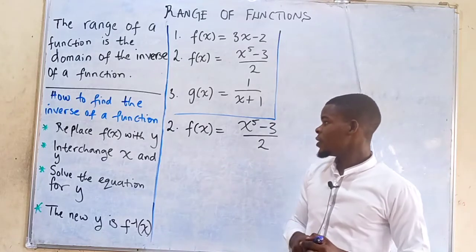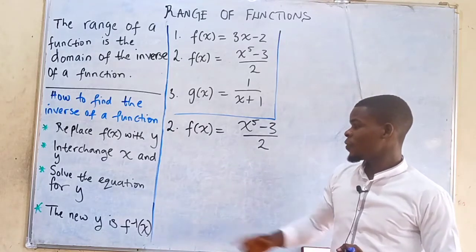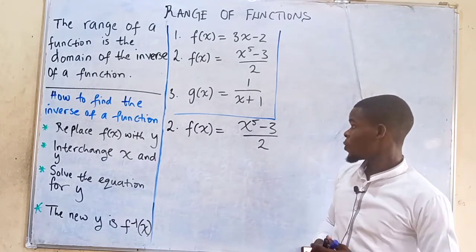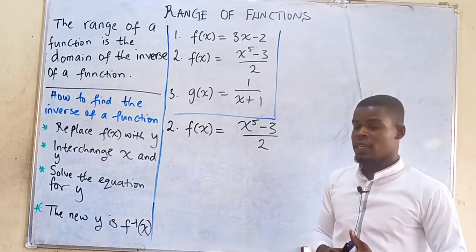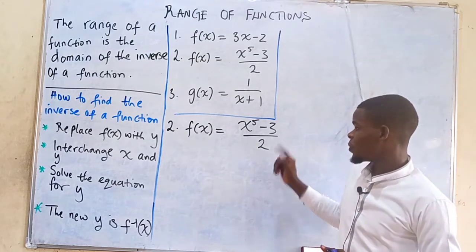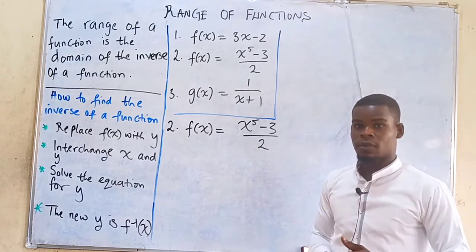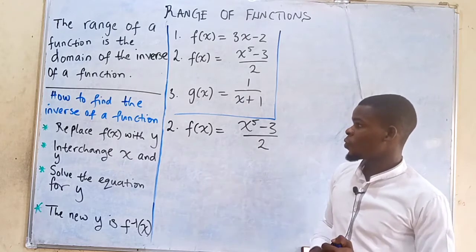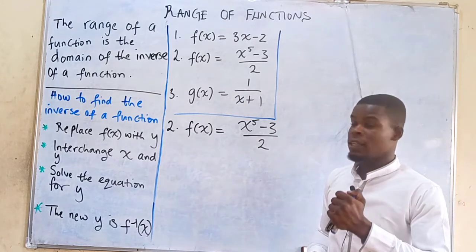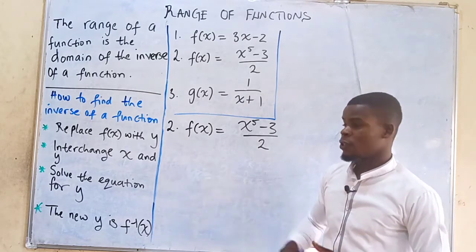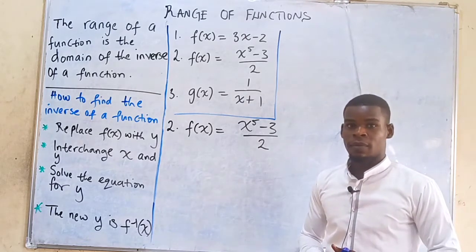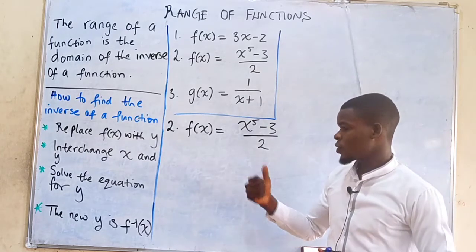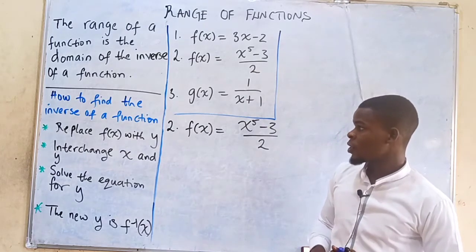Now we want to find the range of the function f(x) = (x⁵ - 3) / 2. To find the range of this function, we need to find the domain of the inverse of this function. So we find the inverse of this function, then look at the domain of that inverse.